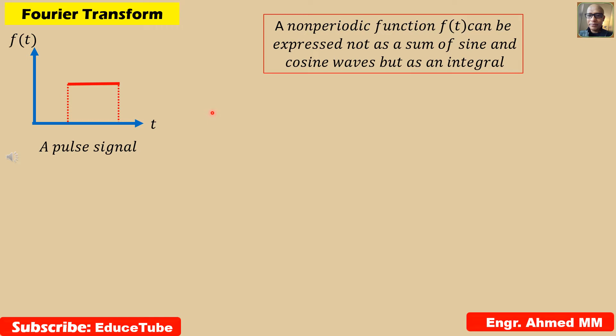The Fourier transform of a function f(t) is a function of a new variable omega, defined as the integral from minus infinity to infinity of f(t) times e to the power minus j omega t dt.